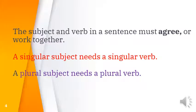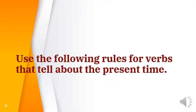So the subject and verb in a sentence must agree, or work together. If the subject is singular, the verb must be singular. If the subject is plural, the verb must also be plural. A singular subject needs a singular verb; a plural subject needs a plural verb. We have to focus very carefully on how to form plural and singular and how to distinguish between them.